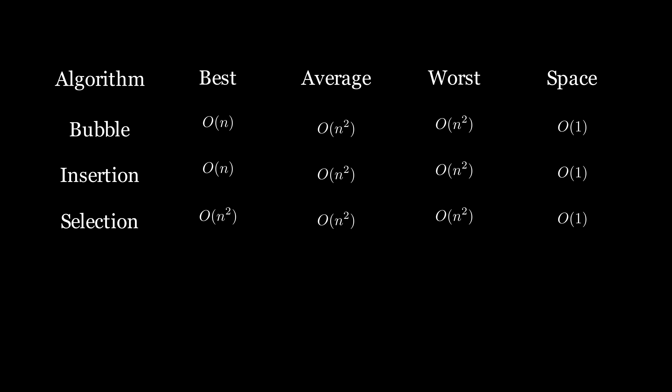Despite its simplicity, selection sort has a time complexity of O(n²) in all cases, because it involves nested loops to find the minimum element and perform swaps. However, its space complexity is constant, as it sorts the array in place without needing extra memory beyond a few variables.